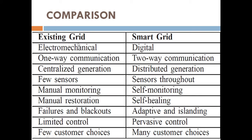Here is a comparison between existing grid and smart grid. Existing grid is electromechanical while smart grid is digital. Existing grid is one-way communication while smart grid is two-way communication — from supplier to consumer and consumer back to supplier. Existing grid has centralized generation while smart grid has distributed generation. Existing grid has limited sensors while smart grid has sensors throughout.